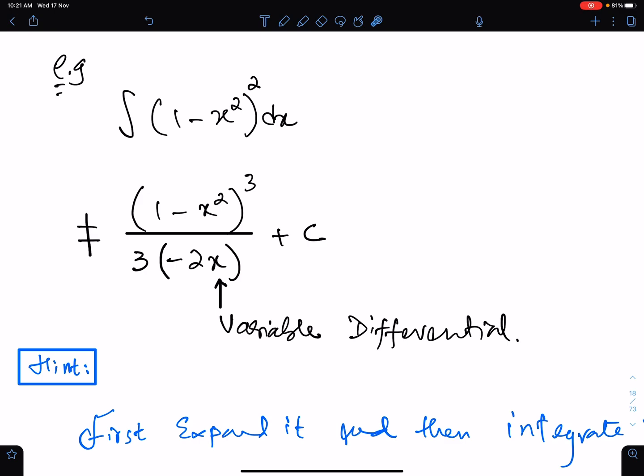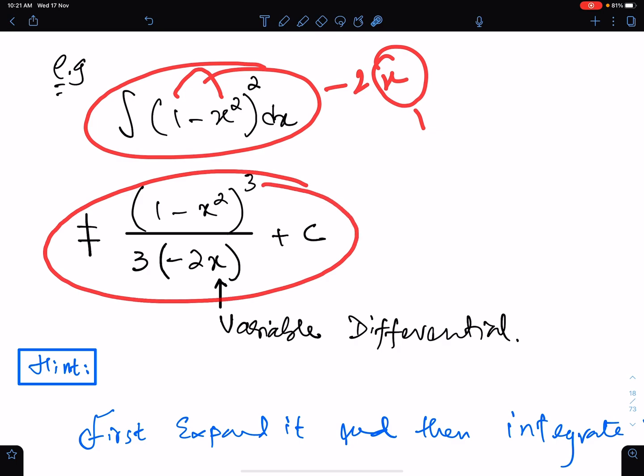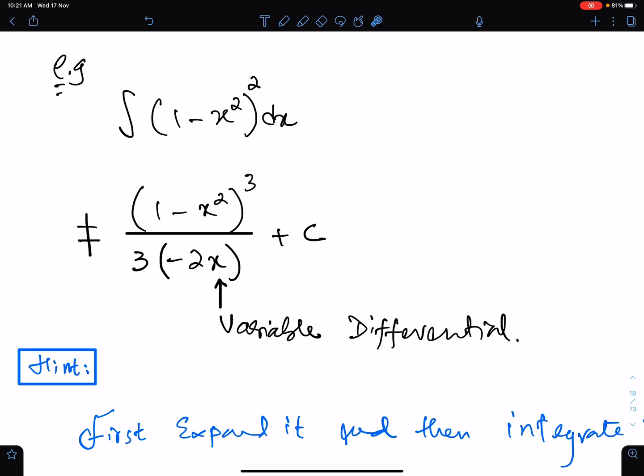And since the differential of this function is negative 2x and this is variable, so you cannot solve this question through composite function rule because we can never divide function by variable differential. So we cannot solve this question through this method.